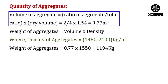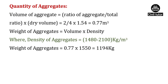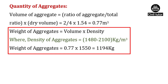Volume of aggregates equals ratio of aggregates upon total ratio into dry volume. Ratio of aggregates for M25 grade of concrete is 2, total ratio is 4, and dry volume is 1.54. Substituting, volume of aggregates equals 0.77 meter cube. The density of aggregates ranges from 1,480 to 2,100 kg per meter cube; assuming 1,550 kg per meter cube, weight of aggregates equals 1,194 kg.